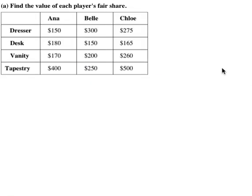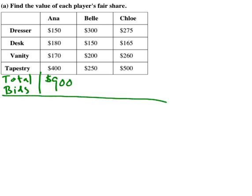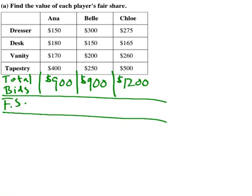First, let's determine each player's fair share. To do that, you need to add up all of their bids. Anna bid a total of $900 on the goods, Belle bid a total of $900, and Chloe bid a total of $1,200. There are three players in the game, so the fair share — abbreviated FS — is the total of your bids divided by the number of players. Anna has a fair share of $300, Belle also has a fair share of $300, and Chloe has a fair share of $400.